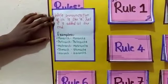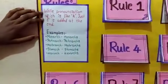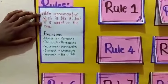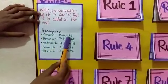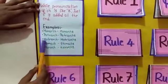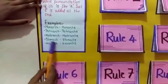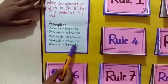Third rule: while pronunciation of CH is like K, just S is added at the end. Examples: monarch-monarchs, patriarch-patriarchs, matriarch-matriarchs, stomach-stomachs, hierarch-hierarchs.